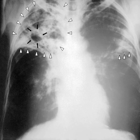The cascade of person-to-person spread can be circumvented by segregating those with active, overt TB and putting them on anti-TB drug regimens. After about two weeks of effective treatment, subjects with nonresistant active infections generally do not remain contagious to others. If someone does become infected, it typically takes three to four weeks before the newly infected person becomes infectious enough to transmit the disease to others.